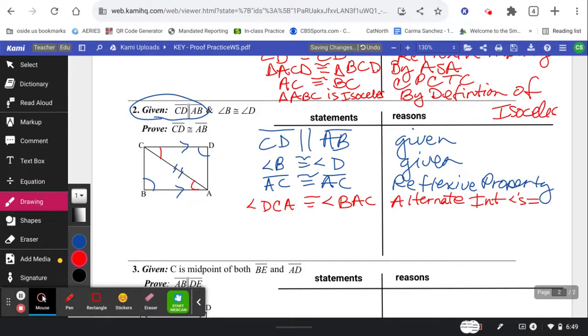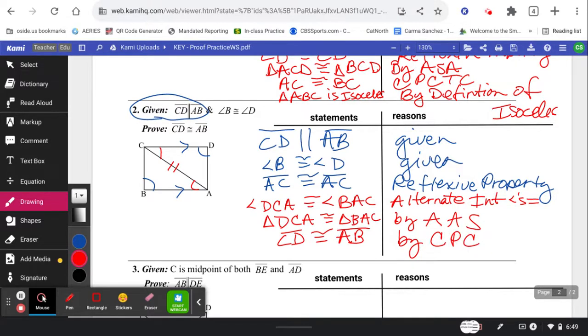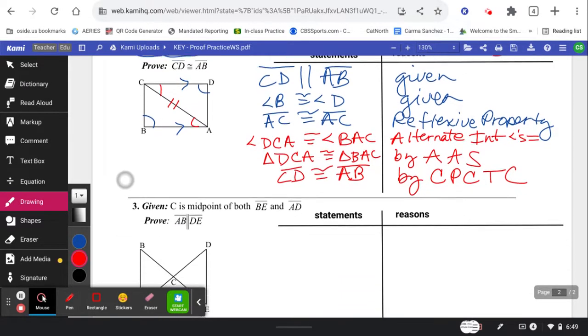All right, now I can state that the triangles are congruent. Triangle DCA is congruent to triangle BAC by angle angle side. Finally, I can say that CD is congruent to AB, the thing I'm trying to prove, by corresponding parts of congruent triangles are congruent. CPCTC.